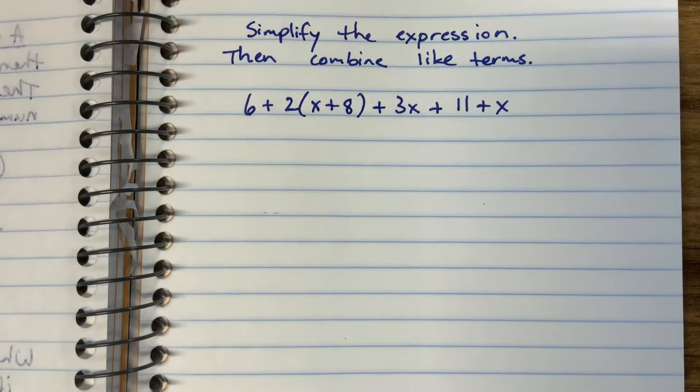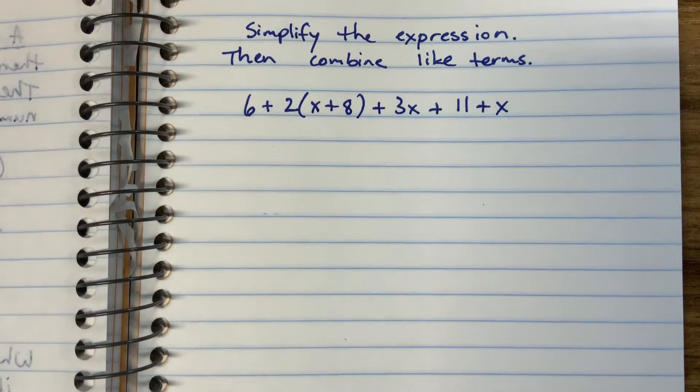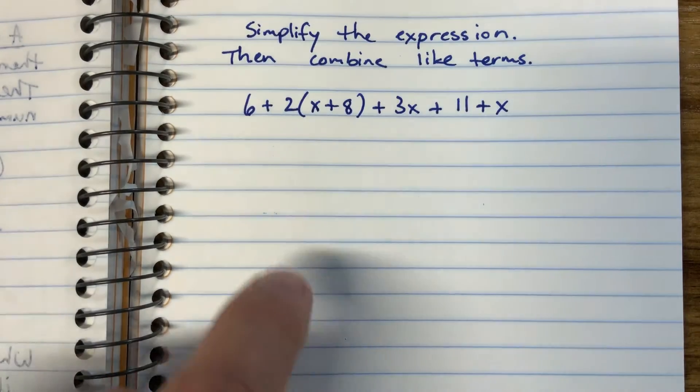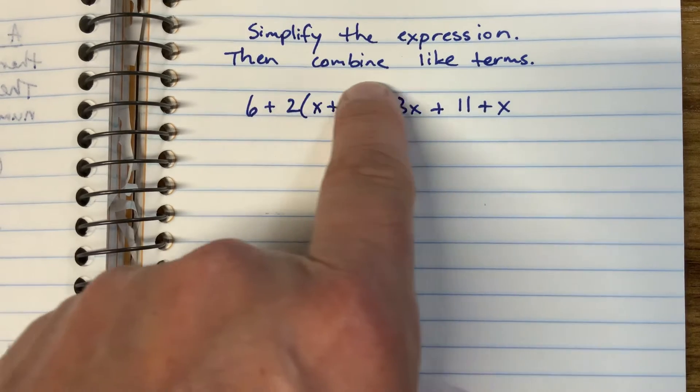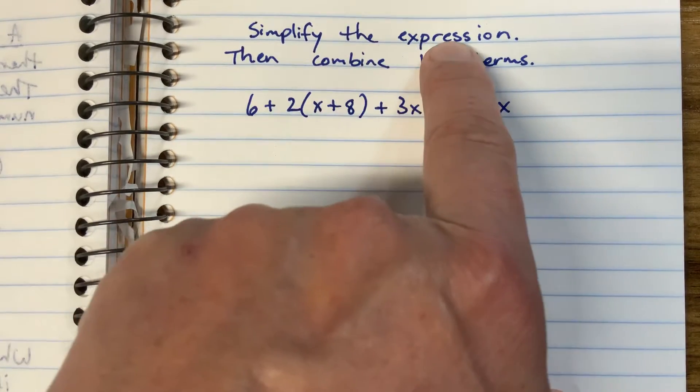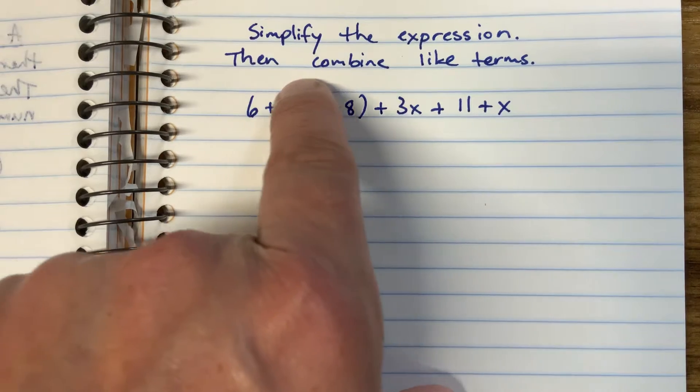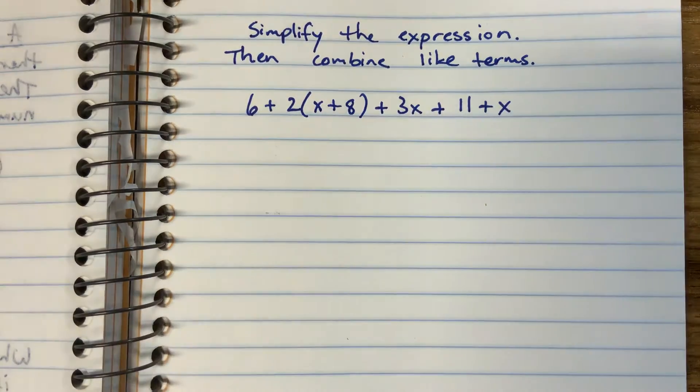So this one looks like a new one but it's really just combining two different things that we've been working on into one problem. Simplify the expression and then combine like terms. We've worked on simplifying expressions before and we've worked on combining like terms, we just haven't done it in the same thing.